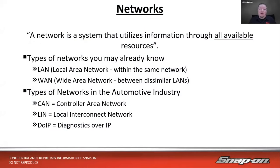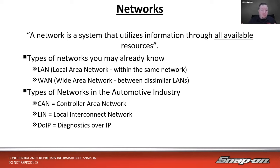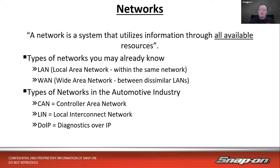Let's define what a network is. A network is a system that utilizes information through all available resources, so any modules or nodes connected to each other can share information. For example, if a transmission control module needed a wheel speed sensor input from the ABS control module, it can get that over the network. Common network types you may know include LAN — local area network, like your shop Wi-Fi.